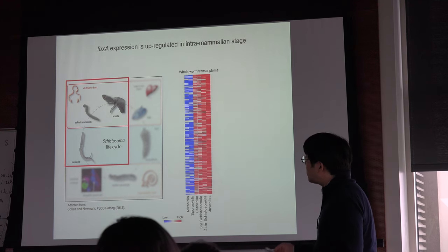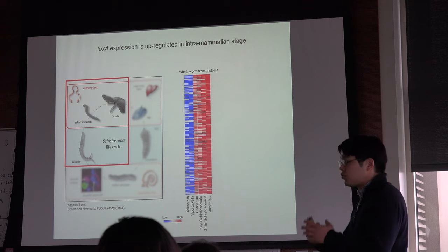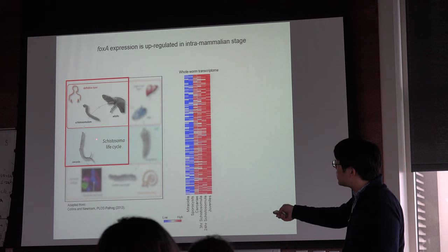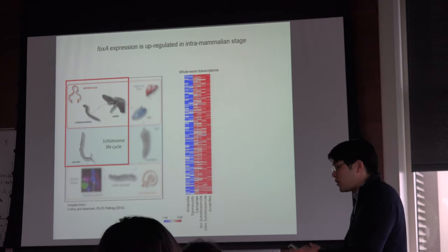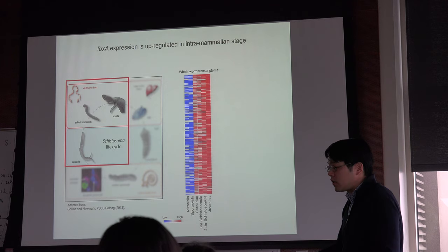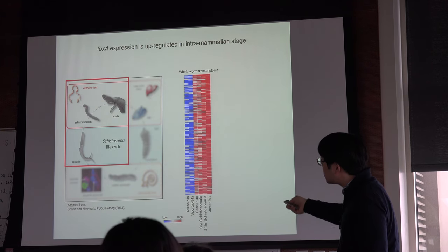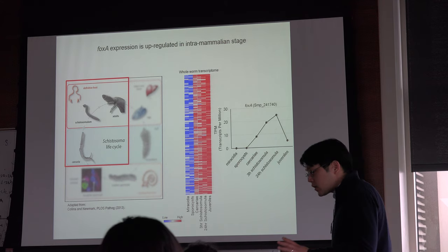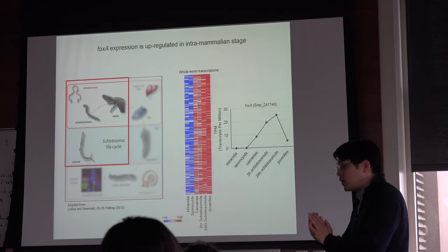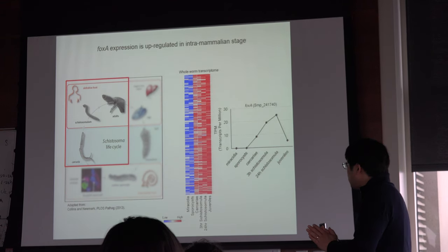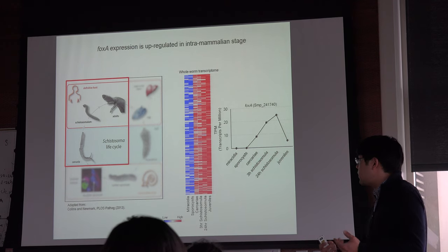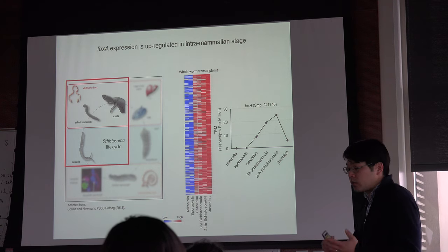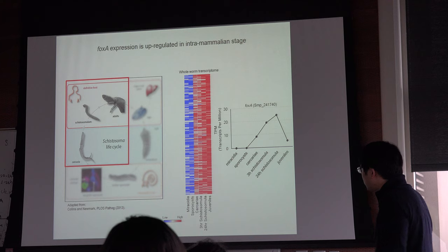To understand these processes, I started looking through whole-transcriptome RNA sequencing data available from individual life cycle stages, assuming that genes important for these transitional events would be upregulated. From a couple hundred candidate genes, I identified one called FOXA. FOXA is a Forkhead box domain-containing transcription factor involved in endodermal differentiation or gut differentiation in model organisms like C. elegans — it seemed like a good interesting target to study further.